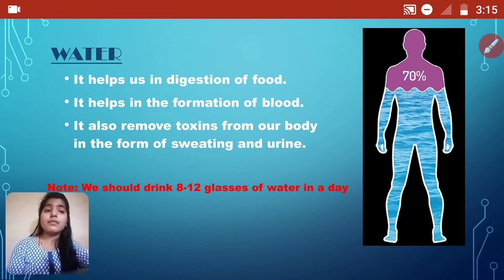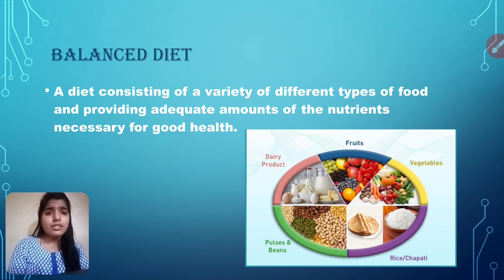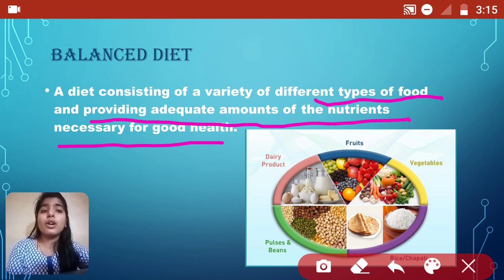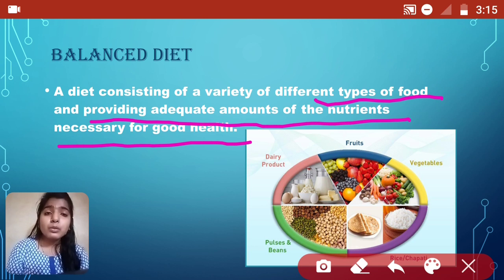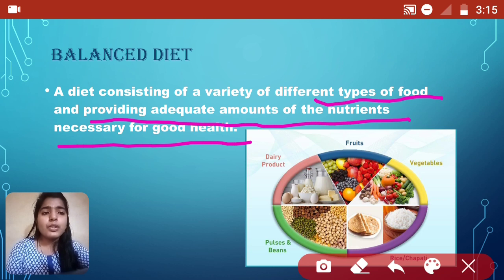Those are all the nutrients. Next is balanced diet. What is a balanced diet? A diet consisting of a variety of different types of food, providing adequate amounts of nutrients necessary for good health. The diet which gives us proper nutrients in the proper amount is called a balanced diet. A balanced diet includes vegetables, fruits, dairy products, pulses and beans, rice and grains.